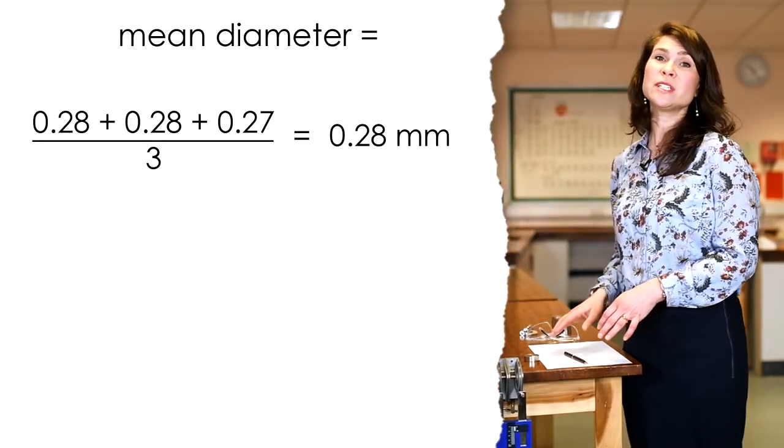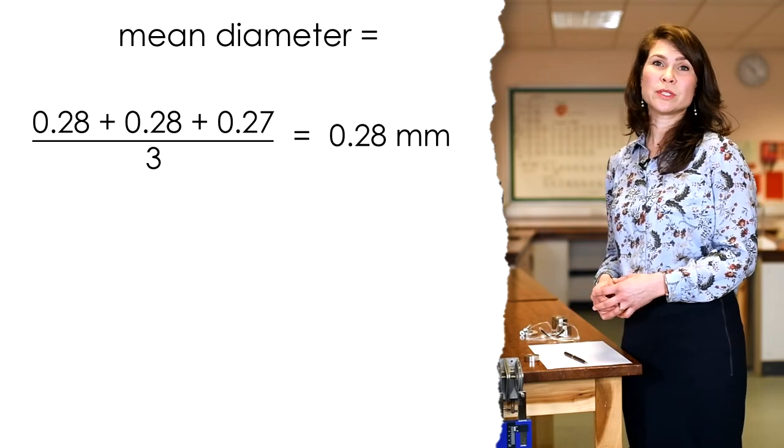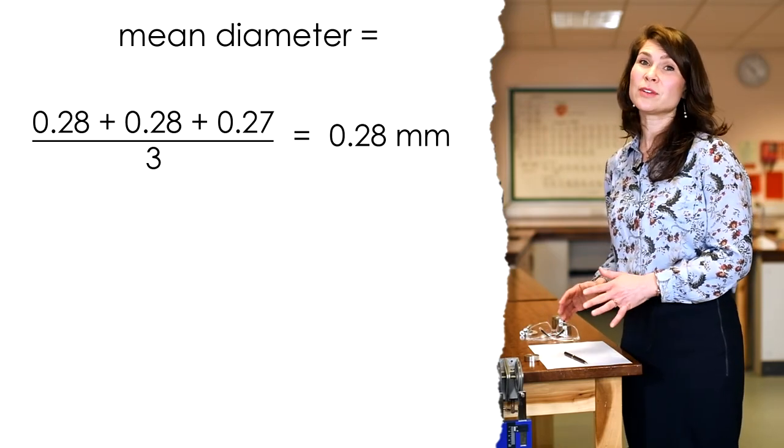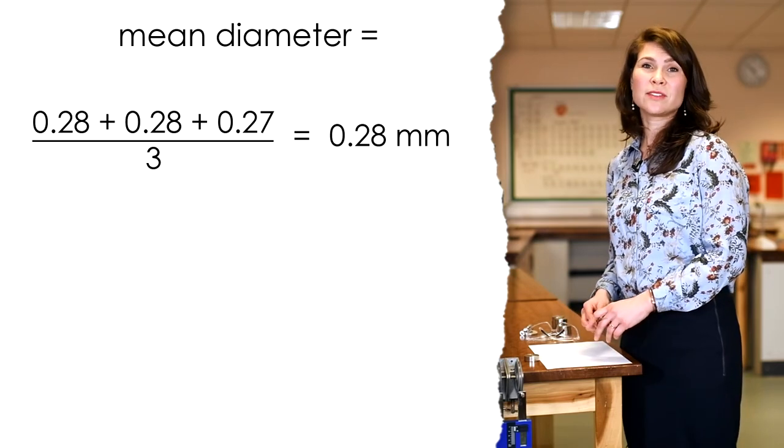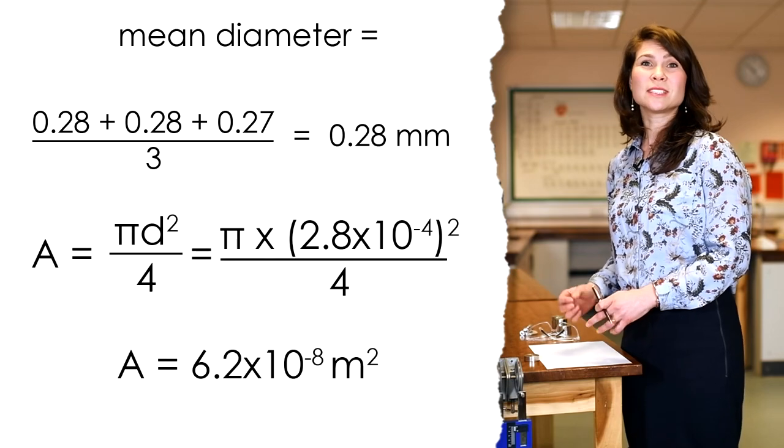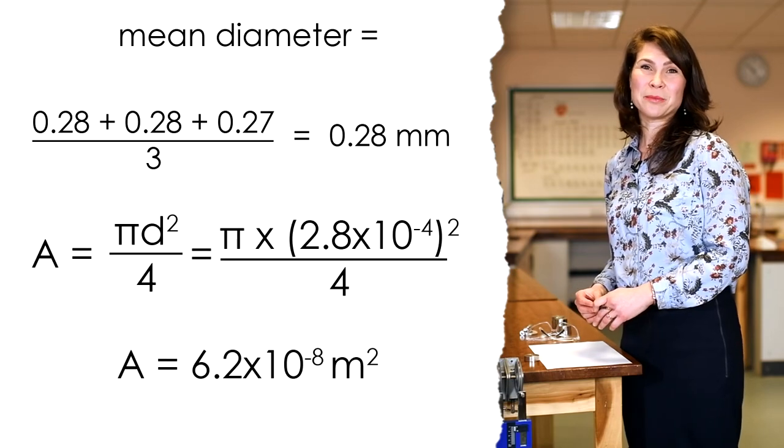I then measured the diameter in the middle of the wire and at the far end of the wire. The first two readings were the same, the diameter was .28 millimetres, but the third was .27 millimetres. However, when I calculated the mean, you still have to give the final result to two significant figures, and so it still averages out to .28 millimetres.